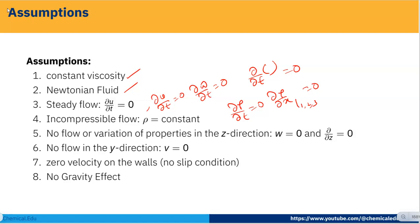Incompressible flow means ∂ρ/∂x = ∂ρ/∂y = ∂ρ/∂z = 0 and ρ is constant. Assumption 5: no flow in the z-direction, so w = 0 and ∂/∂z of anything equals zero. No flow in the y-direction, so v = 0. Assumption 6: no-slip condition at the wall, so velocity at the wall is zero. Assumption 7: no gravity effect.